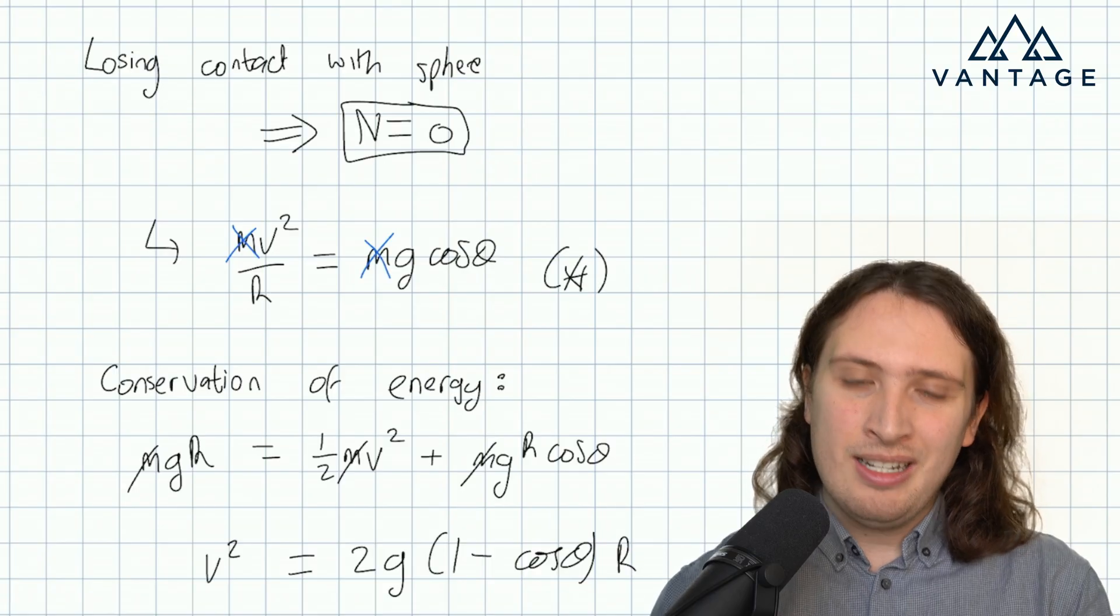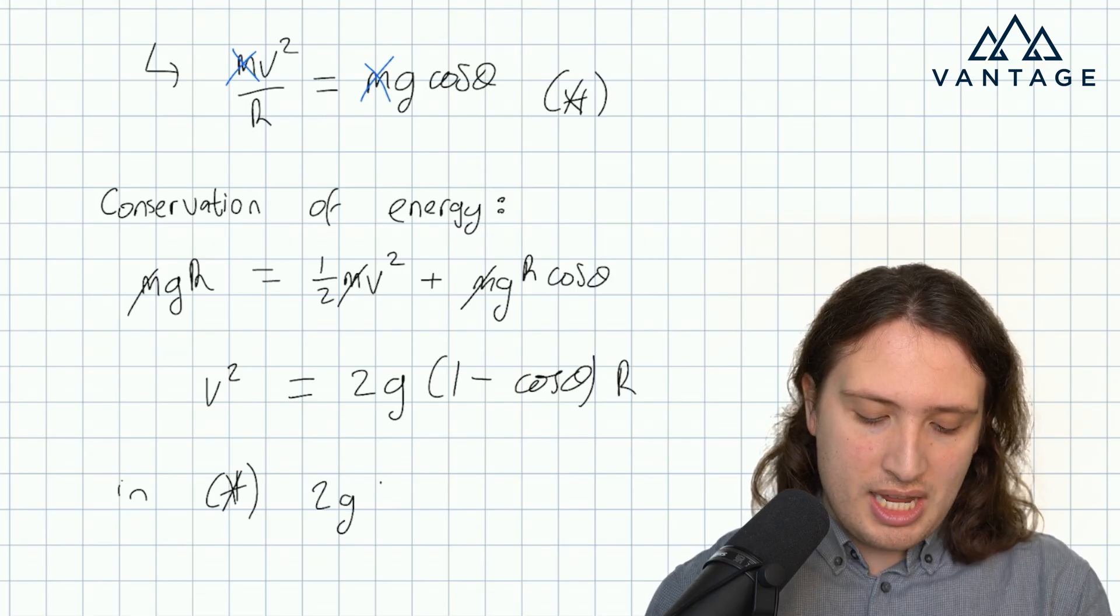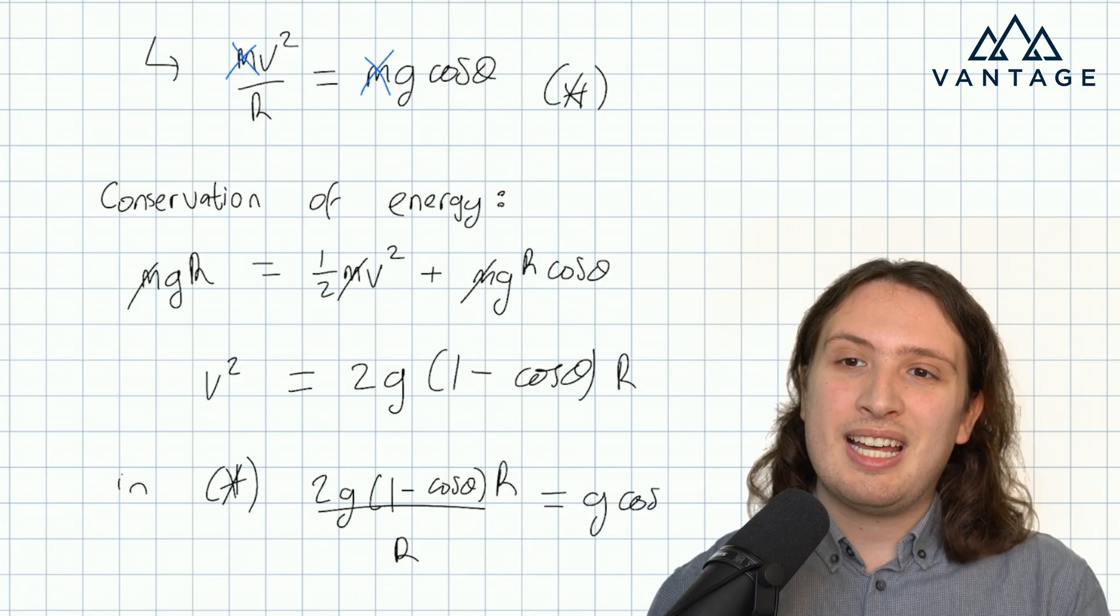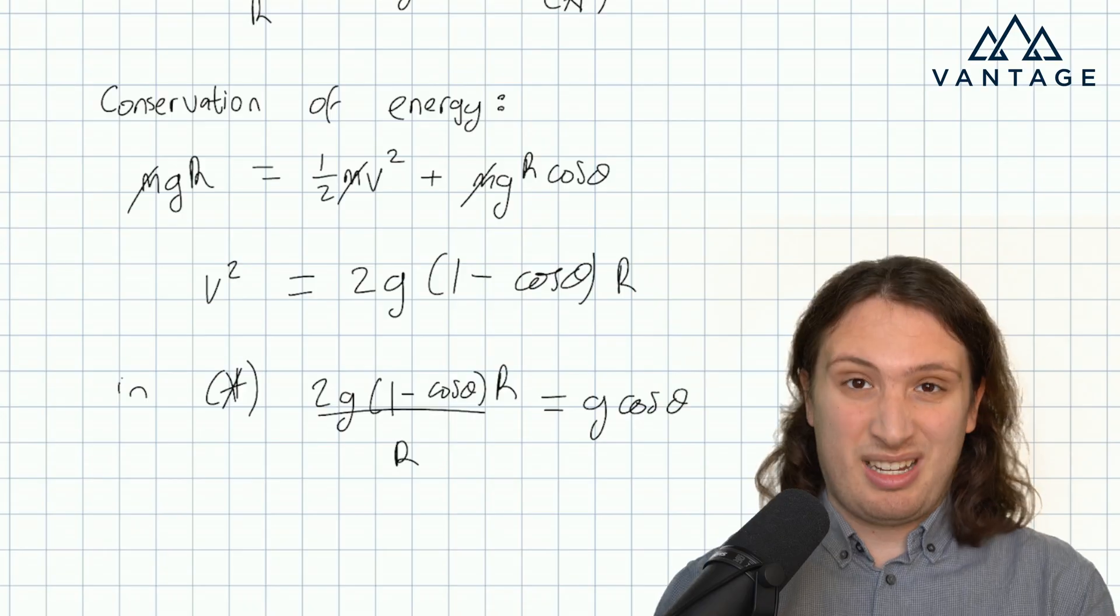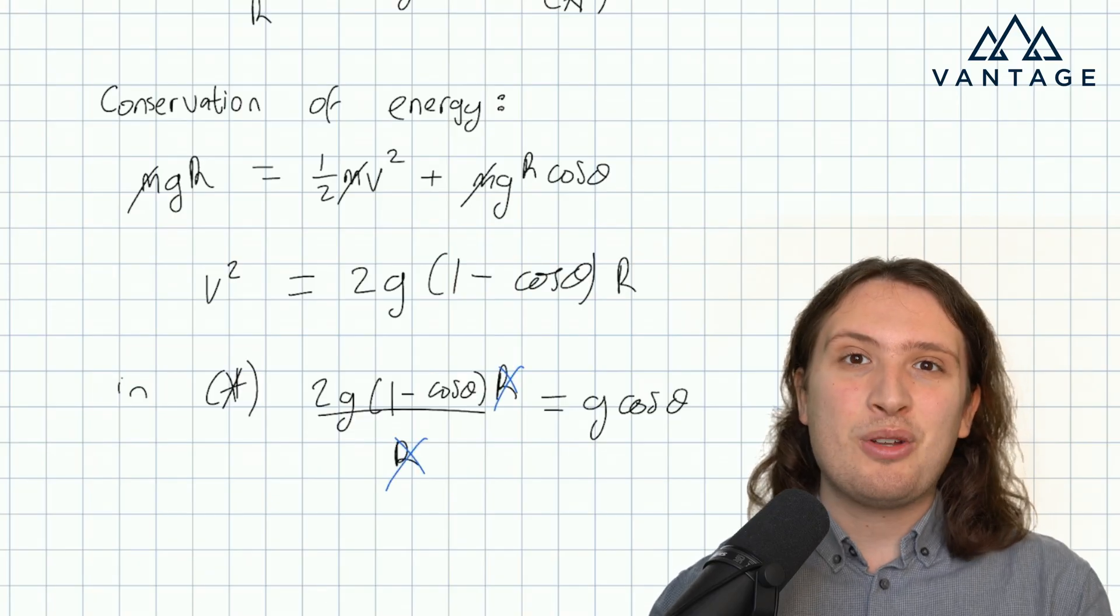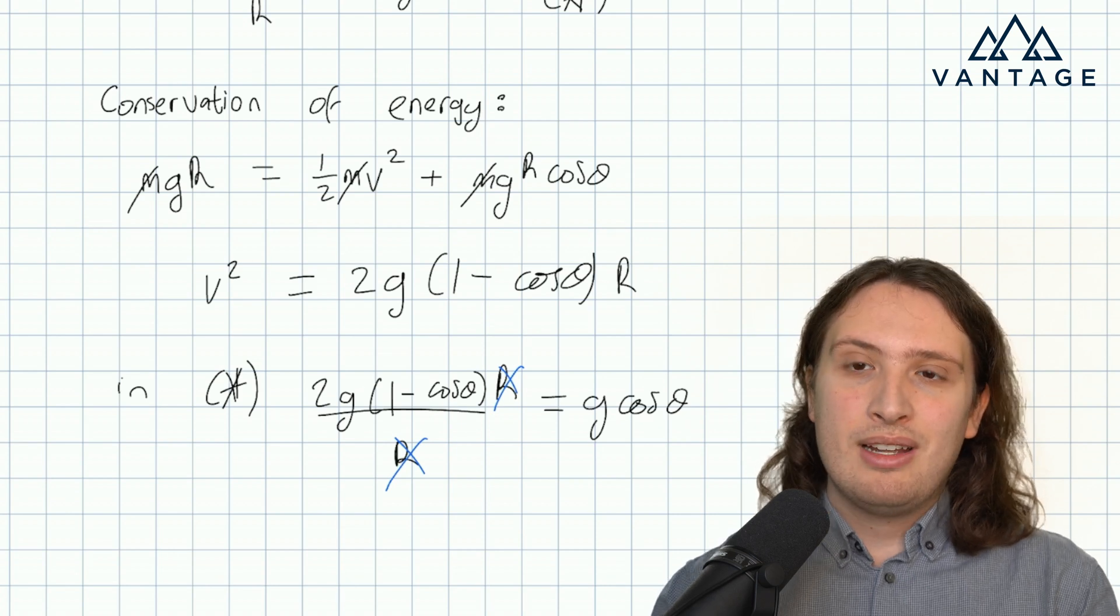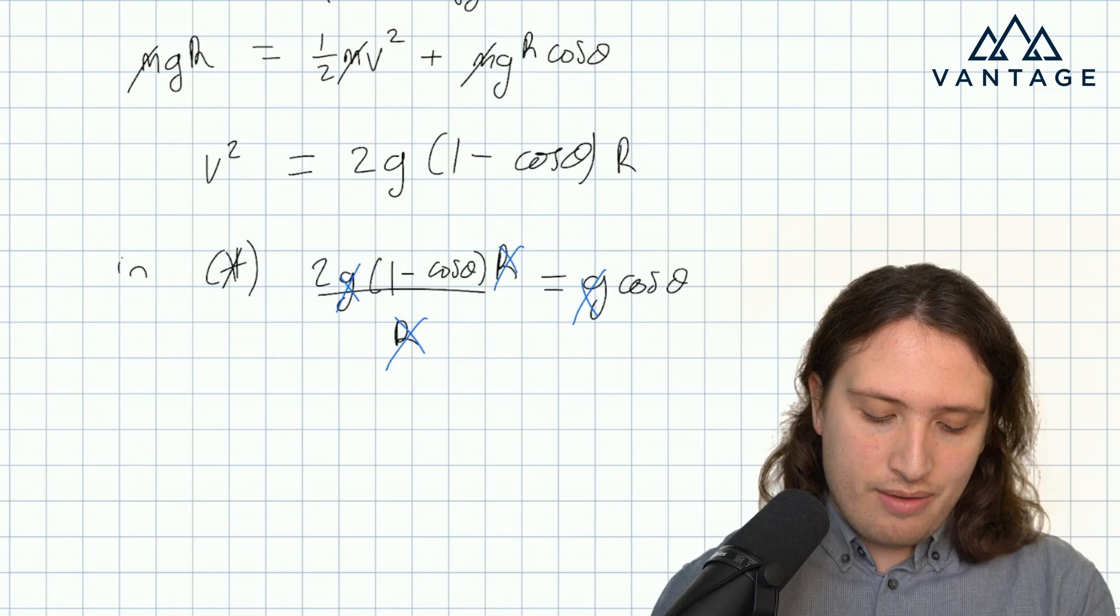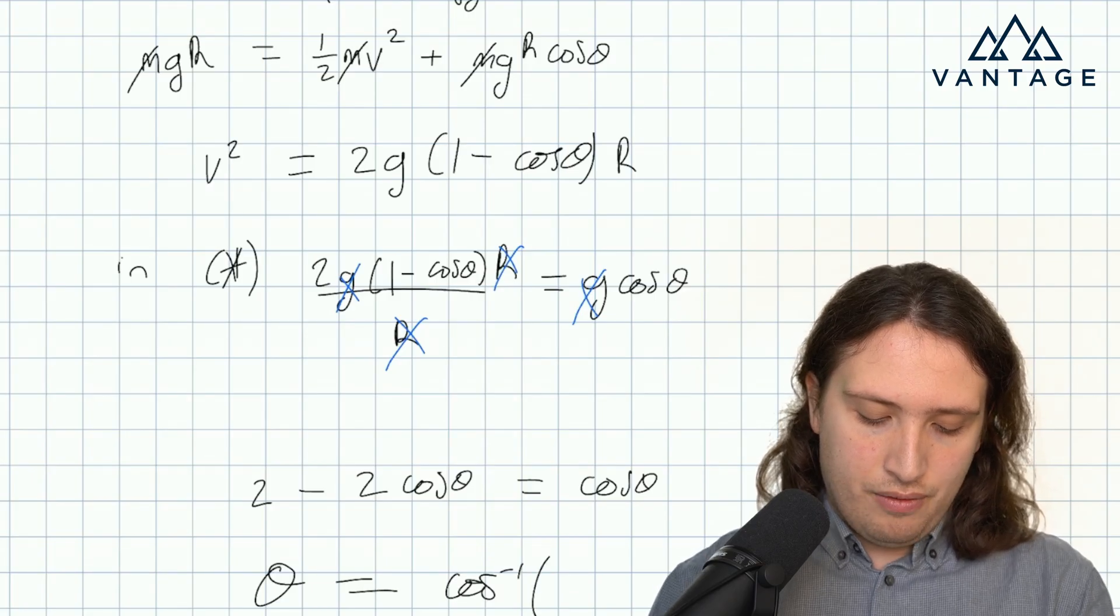So now I can plug that into this equation. We've managed to find this unwanted parameter by using another physics principle, so I get 2g times 1 minus cos theta times R divided by R equals g cos theta. Now this is even nicer than we had dared to speculate previously. Previously we'd speculated maybe the g might cancel, but even the R is cancelling through, so again a nice opportunity to reflect. Both of the physical parameters on which the problem depended, the radius of the sphere and the mass of the object, have both dropped out. This is universal behaviour for a mass of any object on a frictionless sphere. So I cancelled the R's, I cancelled the g, and now what I've got is that 2 minus 2 cos theta equals cos theta, so theta is going to be arccos of two-thirds.